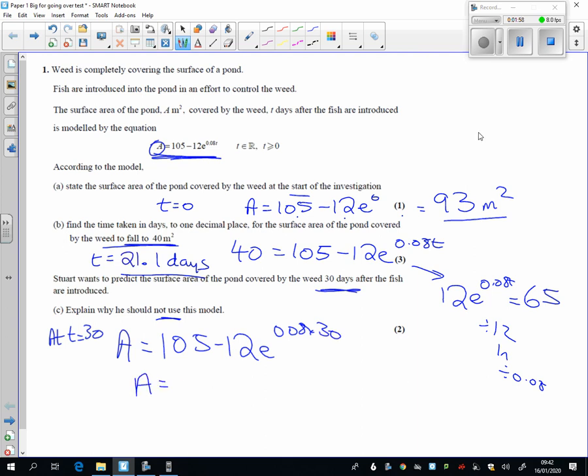it gives you a negative area, a equals minus 27. So, therefore, not appropriate, because the area cannot be less than 0, the area cannot be negative.